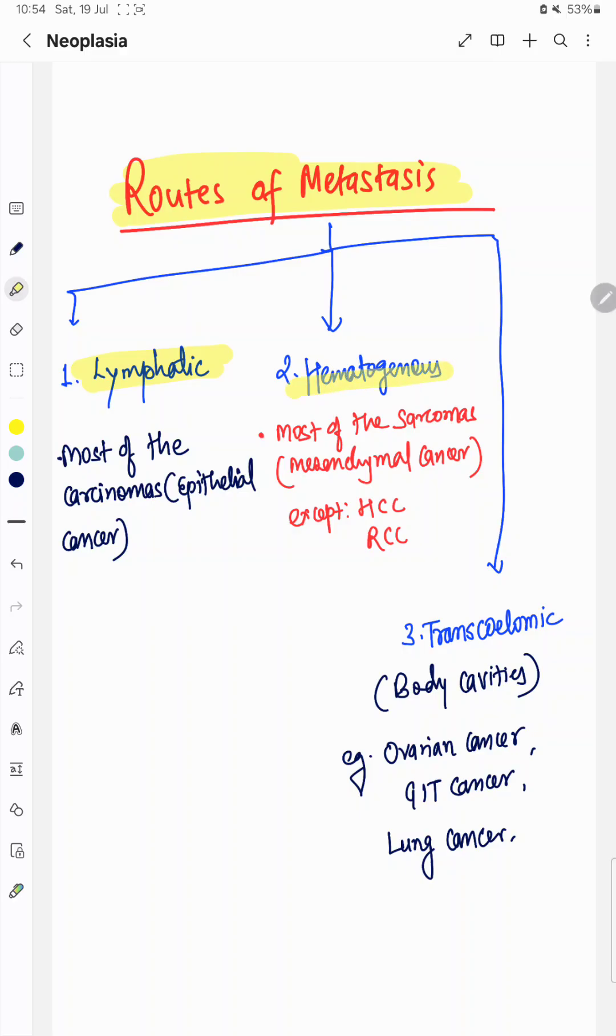Second is hematogenous route. Most of the sarcomas, mesenchymal cancer, follow this route except the hepatocellular carcinoma and renal cell carcinoma. They also spread through hematogenous route.